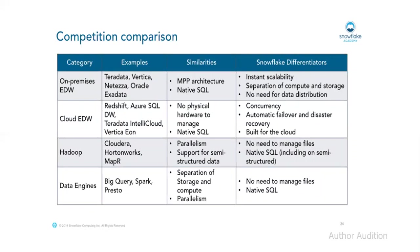Comparing with Hadoop platforms like Cloudera and Hortonworks: both support parallelism and semi-structured data, but in Snowflake you are not required to manage any files — whereas in Hadoop you have HDFS files to monitor. Snowflake offers a data type called VARIANT, so you just load semi-structured data into that column and query it directly. Native SQL support for semi-structured data is a key differentiator.